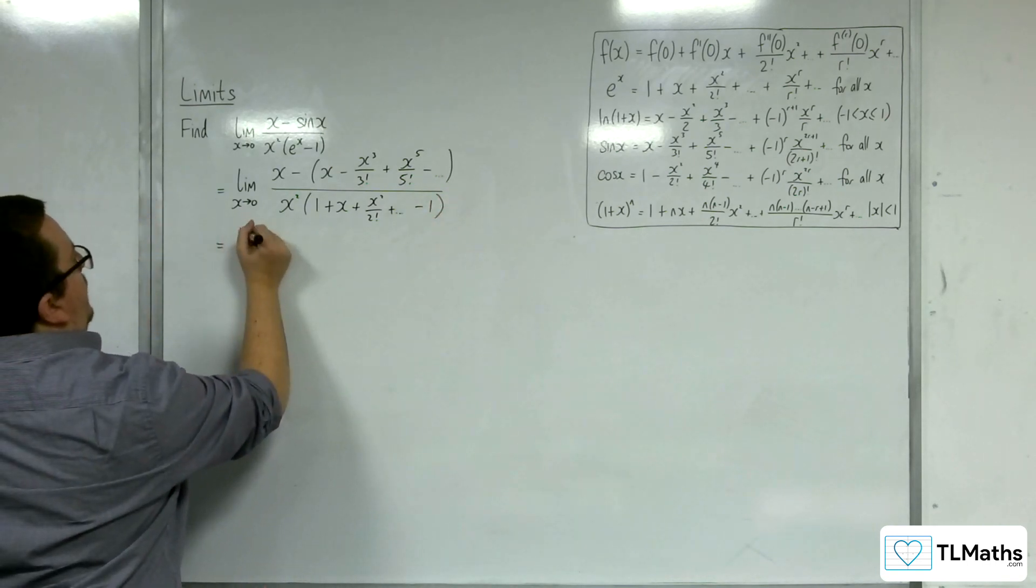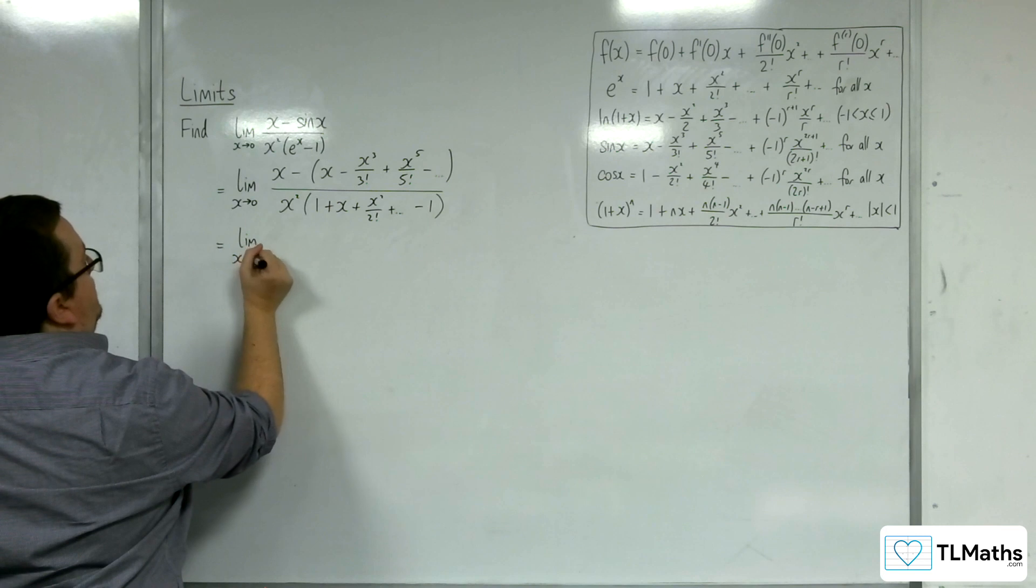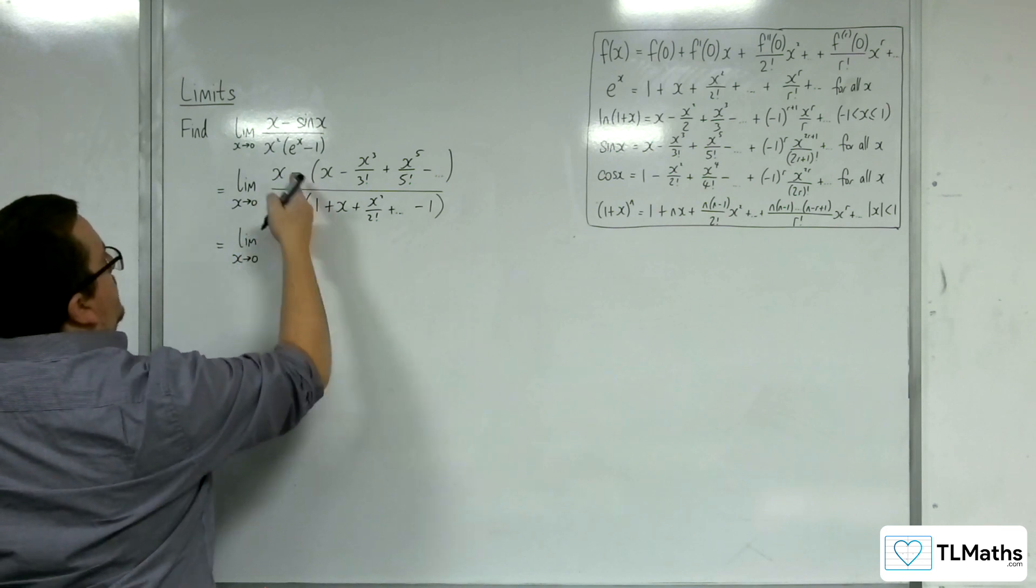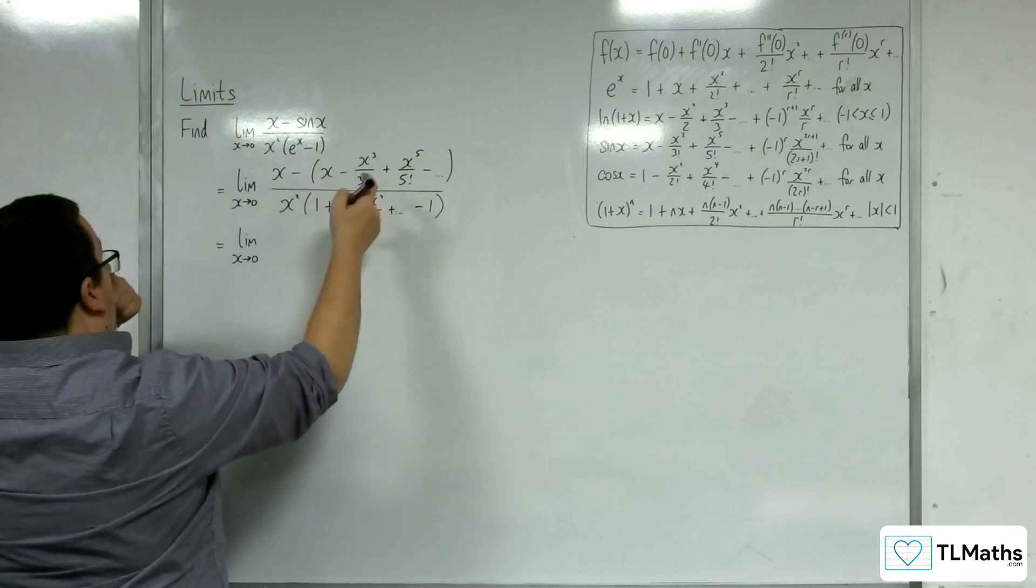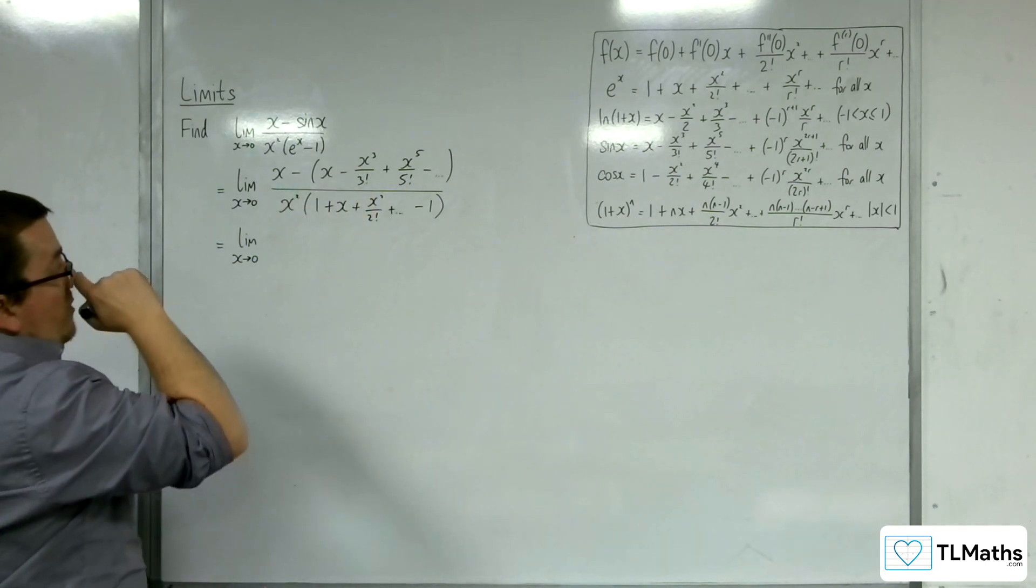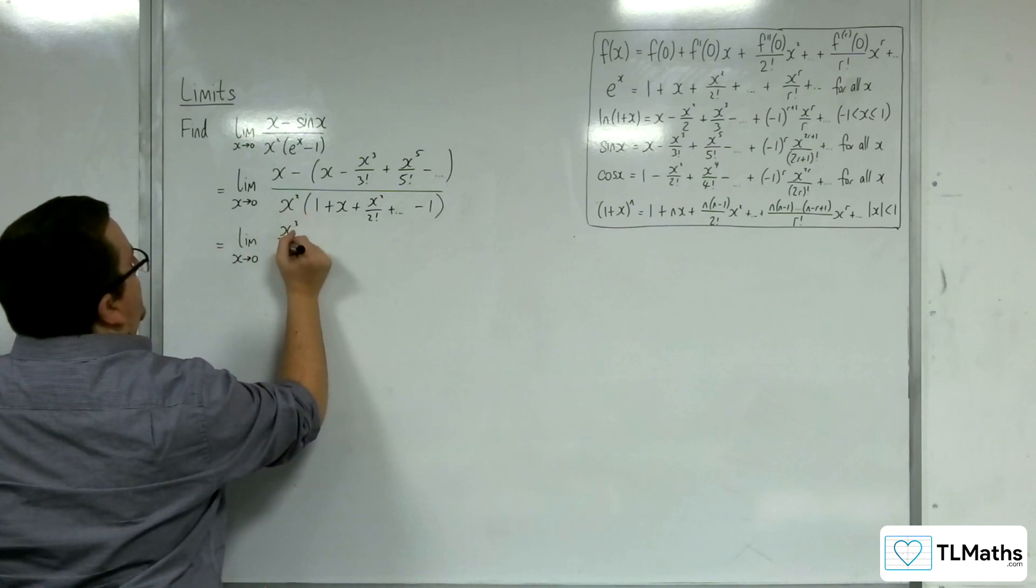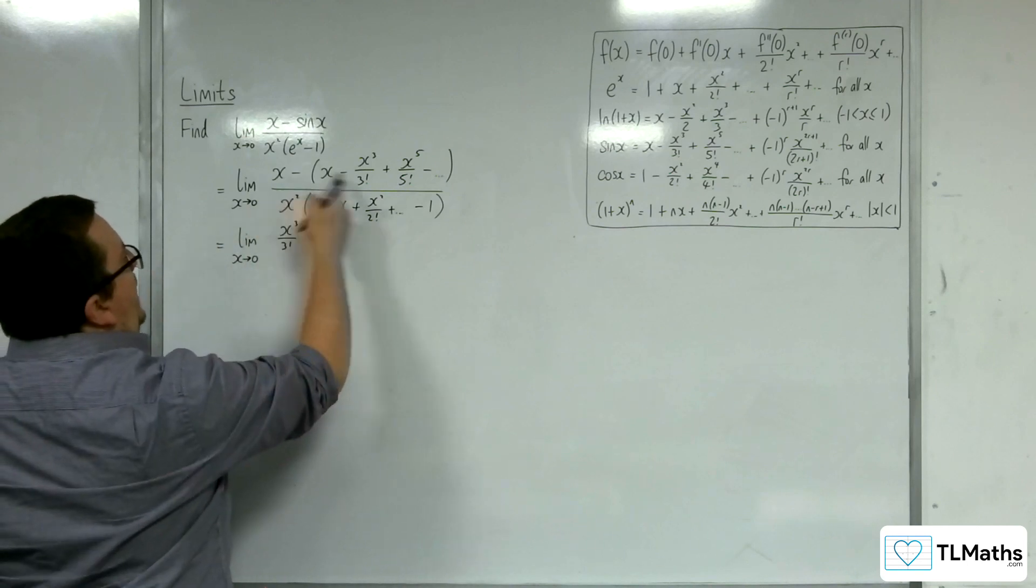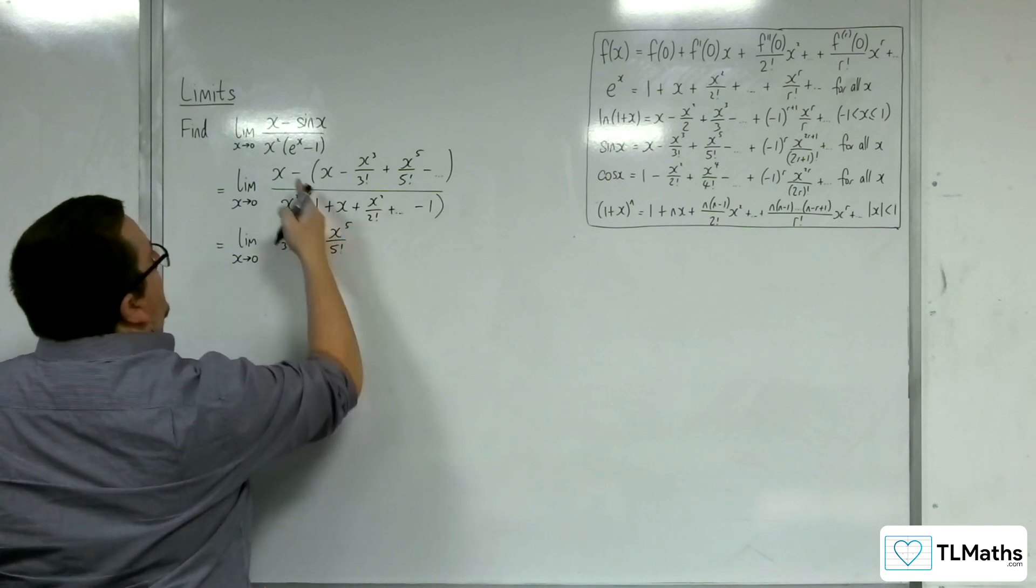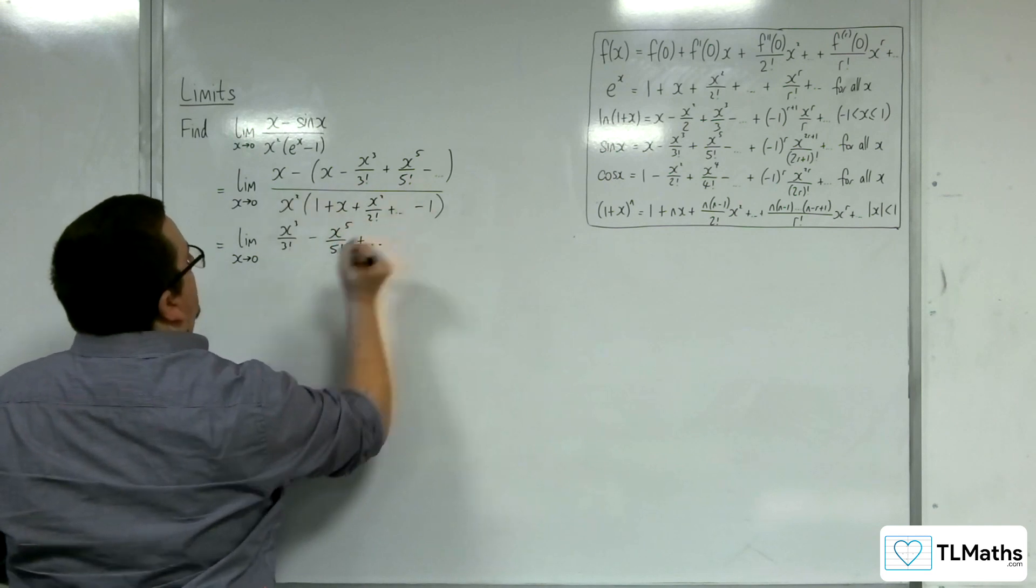So let's simplify the numerator and denominator. We've got x take away x, so that's just going to be 0. Then we've got take away minus, so plus x cubed over 3 factorial, and then take away x to the 5 over 5 factorial, and then the other terms.